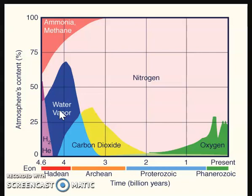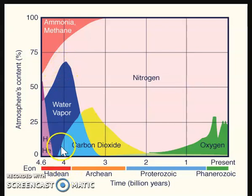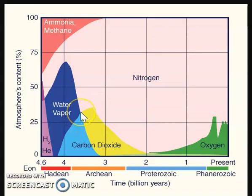In that process of outgassing, we get a lot of water vapor, carbon dioxide, some methane, and other compounds added to the Earth. Here we see that large peak in water vapor as the outgassing continues, and also carbon dioxide peaking as the outgassing continues.